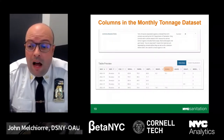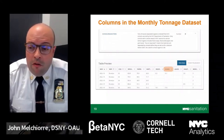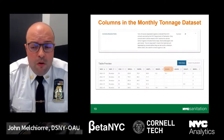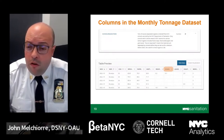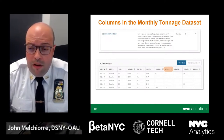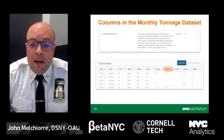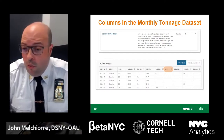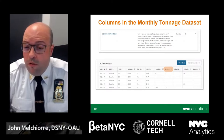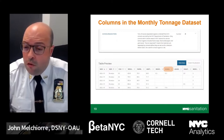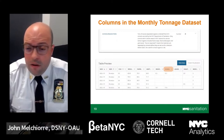The eighth column in the monthly tonnage data set, highlighted in orange, shows the tons of source-separated organics collected from New York City schools. Only certain schools within areas of New York City receive this service. Like residents, school organics include food scraps, food-soiled paper, and yard waste. The code for school organics is 46.